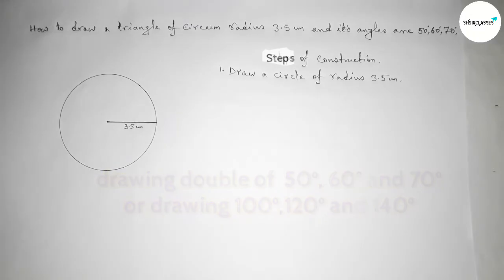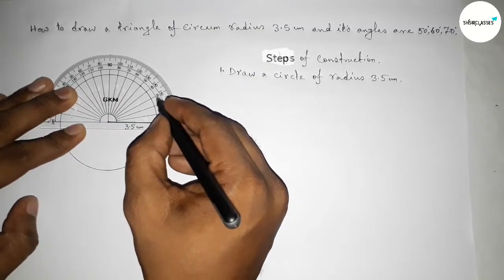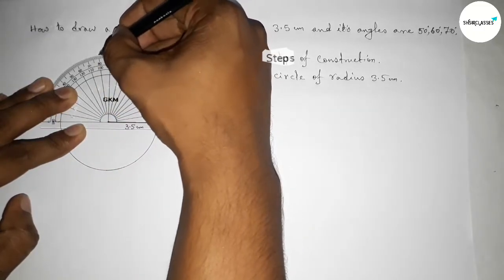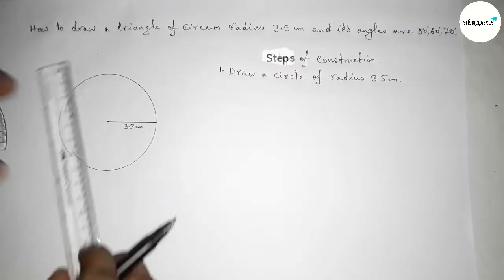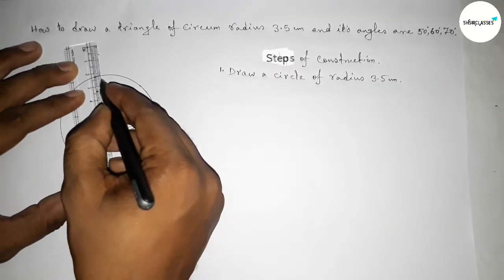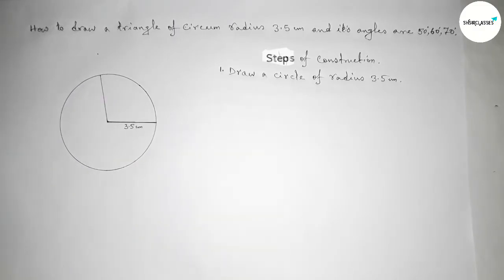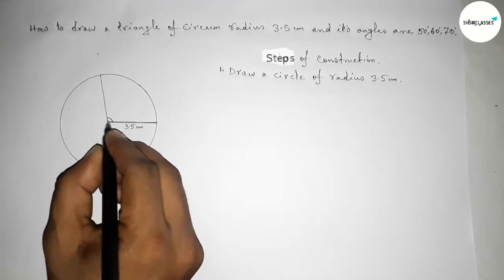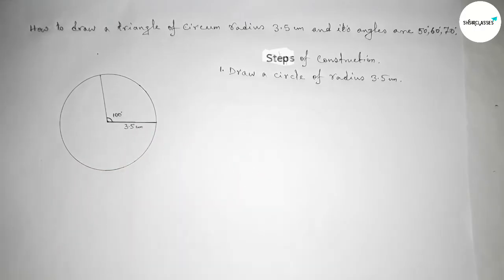First, drawing a 100 degree angle at the center using a protractor — counting — this is 100 degrees. Now joining this line to get the 100 degree angle. We get here a 100 degree angle.